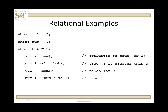Suppose we have val and num and bob declared short with values of 5, 8, and 0. The expression val less than or equal to num, how does that evaluate? Val is 5, num is 8.